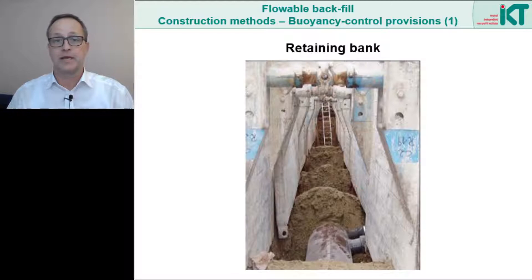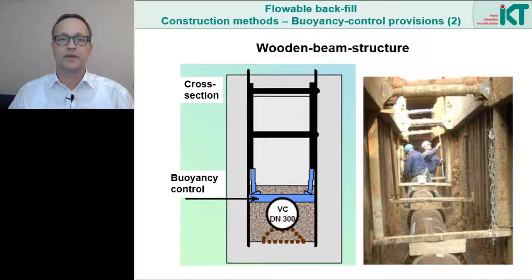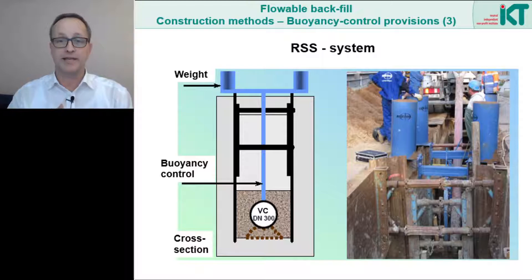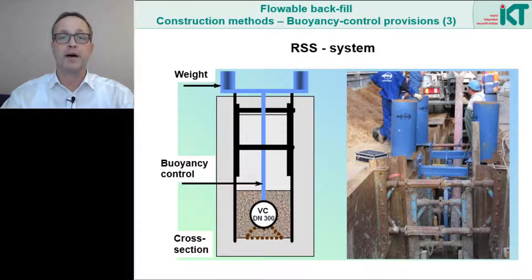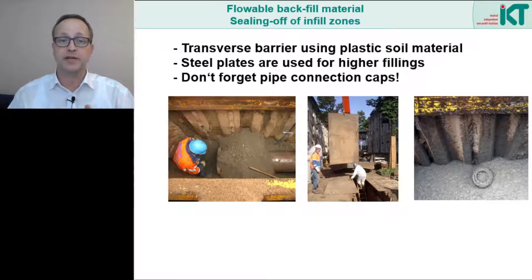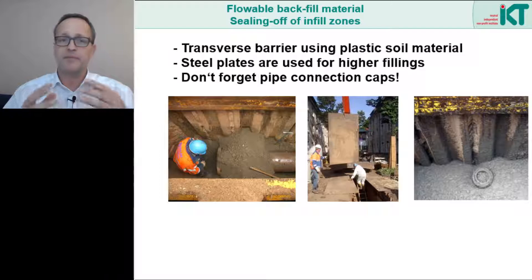There are many different technical possibilities for buoyancy control. Here we see a series of retaining banks made of plastic filling material, allowing filling up to the pipe crown — then the material must first harden before new material is added. Here we see a wooden beam structure where the cross beam is supported by vertical beams against the shoring. After filling over the pipe crown and the hardening begins, the shoring can be removed. Here we see a system by the company RSS where pipes are supported by a vertical bar against a beam on the surface; counterweights prevent the beam from lifting off, and the system can also be combined with load cells to measure buoyancy forces. We must also prevent the flowable backfill material from flowing away — transverse barriers of plastic material are used to confine the filling section, and for higher filling, steel plates can also be used. Connections should be kept properly sealed.